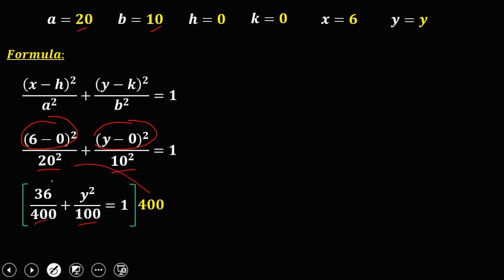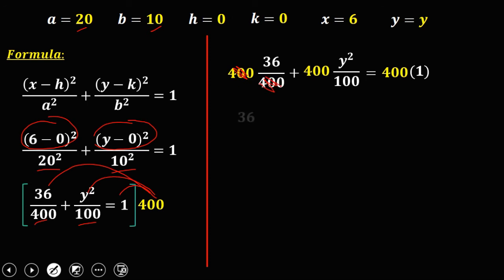Then distribute this LCD to every term. So 400 times 36 over 400, then 400 times y squared over 100, and 400 times 1. Then simplify. So cancel this 400. So we have 36, and 400 divided by 100, this one is 4. Then you multiply, so that's 4y².